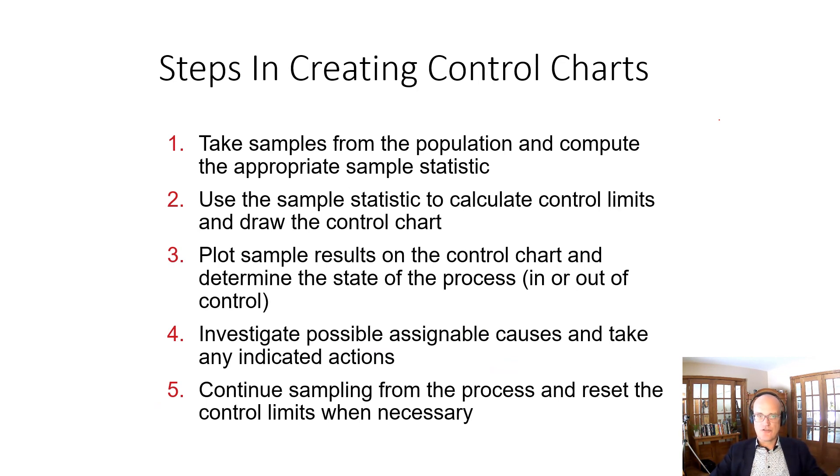How do we create these control charts? We take samples from the population and compute the appropriate sample statistic—we look at ranges or standard deviations, and we look at averages. Use the sample statistic to calculate control limits and draw the control chart. We plot the sample results on the control chart and determine the state of the process. If we're out of control, we look for possible assignable causes and take any indicated actions. On an ongoing basis, we continue sampling from the process and reset the control limits when necessary.